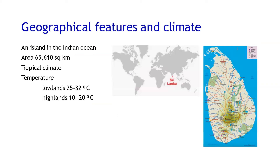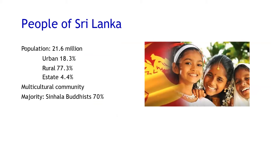Sri Lanka is a tropical country, a small dot in the Indian Ocean. We have an agricultural-based economy with full of rivers and mountains in the country — a beautiful landscape. The Sri Lankan population consists of a multicultural community. We have Sinhalas, the majority of the country — Sinhala Buddhists — about 70% of the population, and 77% of the population is considered rural.